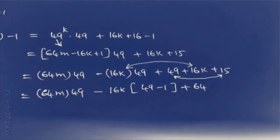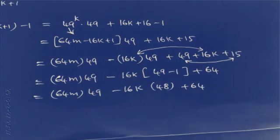The first term is 64m × 49. Taking 16k common from the next terms: -16k(49 - 1) + 49 + 15. This gives us 64m × 49 - 16k × 48 + 64.